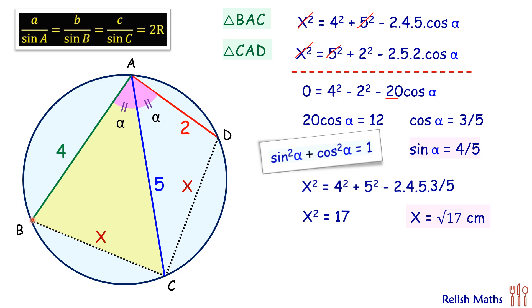And a is the value of BC, and sin A is this angle alpha. So here readjusting this formula, we get R = a/(2 sin A). Here putting the value of a as x and sin A as sin α, x we know is √17, sin α is 4/5. Solving it, we'll get the radius of this circle as 5√17/8, and that's our answer.